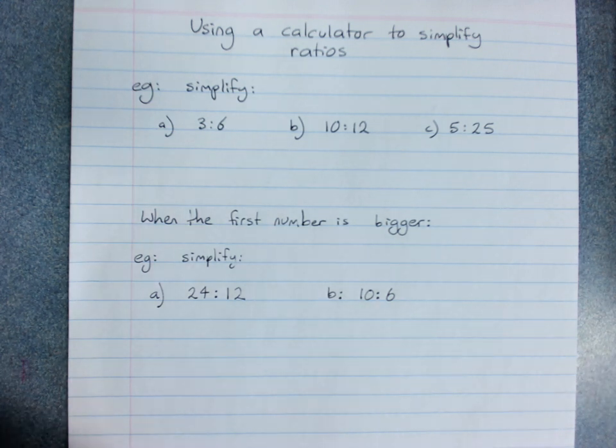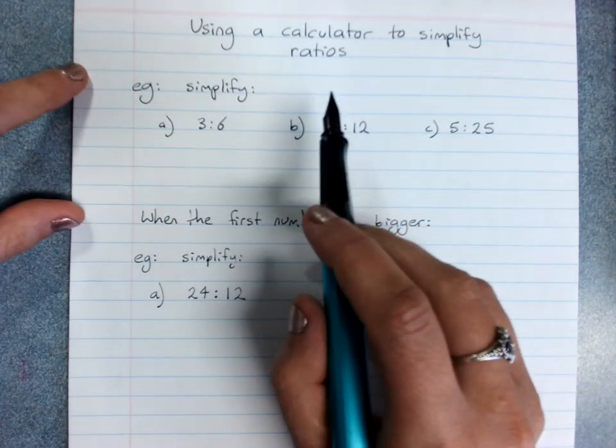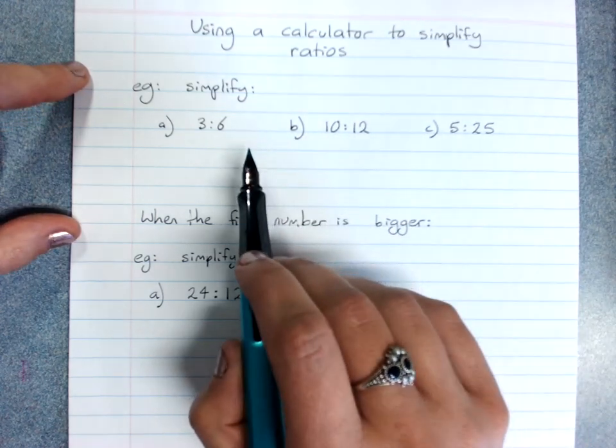Using a calculator to simplify ratios. This is a method to help you get the right answer when you're simplifying ratios because simplifying ratios is just like simplifying fractions.